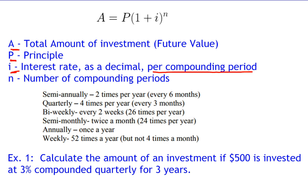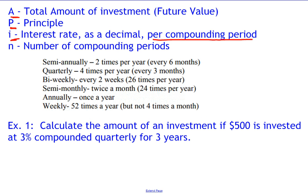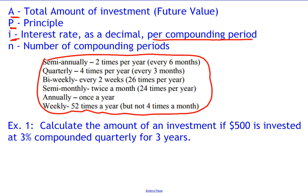And n is the number of compounding periods. For example, if we compound four times a year for three years, four times three is twelve, so n equals twelve. Here are some common compounding period terms: semi-annually is twice a year, quarterly is four times a year, bi-weekly is every two weeks — 26 times a year, semi-monthly is twice a month, annually is once a year, and weekly is 52 times a year.